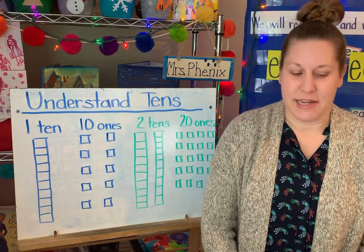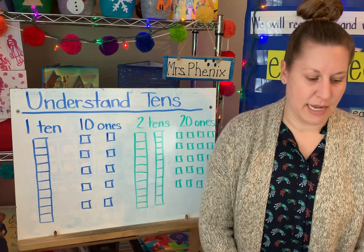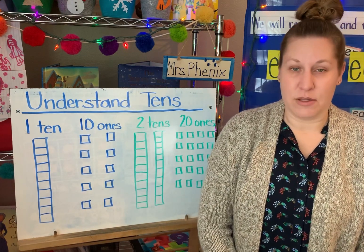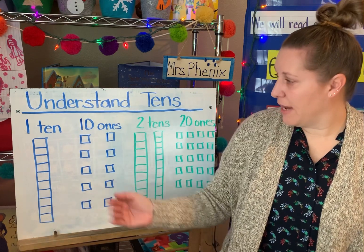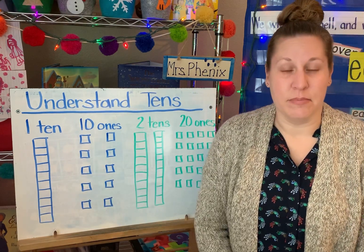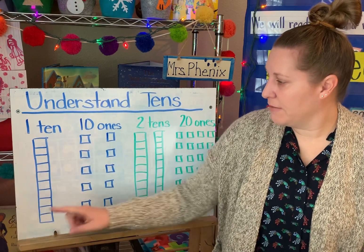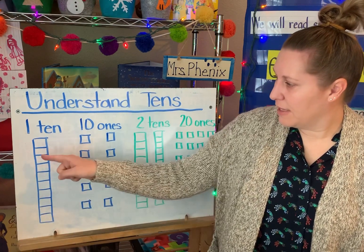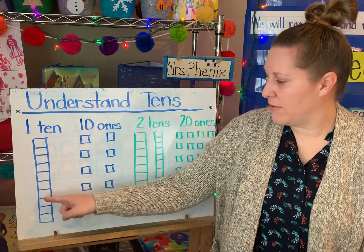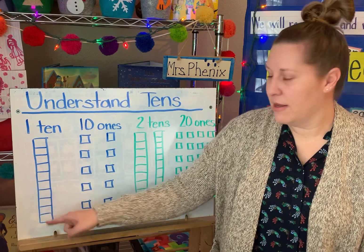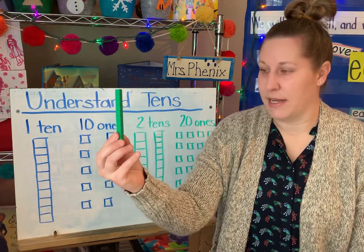So we're going to understand that we can group numbers into tens and recognize that one 10 is made up of 10 ones. So that's what I have here on my whiteboard. I've got one group of 10 — look at that — it's 1, 2, 3, 4, 5, 6, 7, 8, 9, 10 blocks all connected together like this.